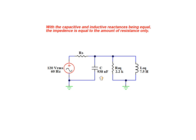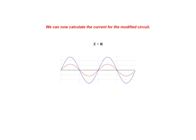Once the desired capacitor has been added to the circuit, the capacitive reactance and inductive reactance cancel each other out. As a result, the circuit appears to be purely resistive to the source. We can therefore use the resistance value provided to arrive at an RMS current value of 54.545 milliamps. It is also important to note that the resulting current phase angle is equal to zero, meaning that the voltage and current are now in phase.